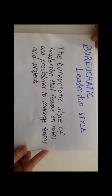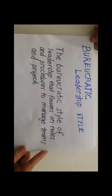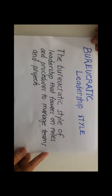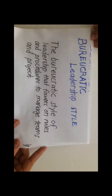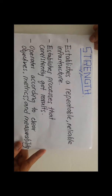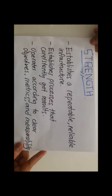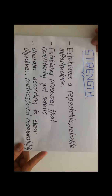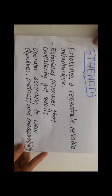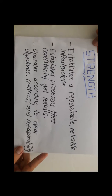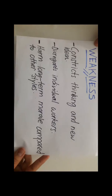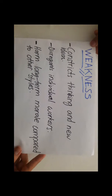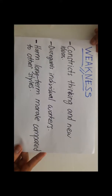For the second leadership style, bureaucratic leadership. Bureaucratic leadership can be defined as a style of leadership that focuses on rules and procedures to manage team members' projects. For the strengths: first, it establishes a repeatable, reliable infrastructure; second, it establishes processes that can consistently produce results; and third, it operates according to clear objective metrics and measurability. For the weakness, it can hinder creative thinking and new ideas, and may discredit individual workers.